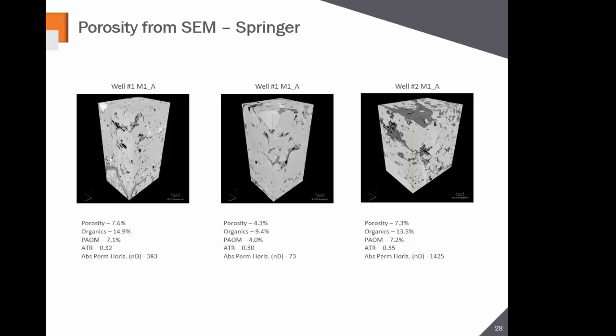Then we start simulating permeability values. Horizontal permeability: 3.83 nanodarcies, 73 nanodarcies, and 14.25 nanodarcies — that's 1,425 nanodarcies — on the one with interesting features. If you have higher amounts of organics, you can start producing higher perms because the organics are really the pathway for pore network development. On the two outside rocks with 13.5% organics we get 1,400 nanodarcies. On the left with 14.9% organics we get 383 nanodarcies. When organic porosity drops, perms start to drop. This is very useful for understanding where to land your target zone and how well matrix permeability will assist your completion design.